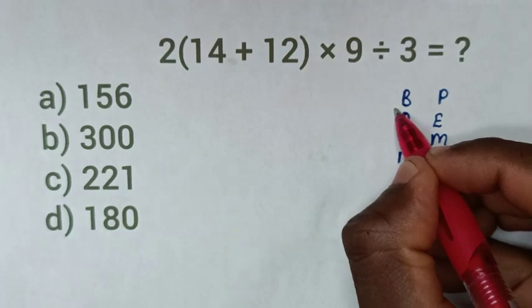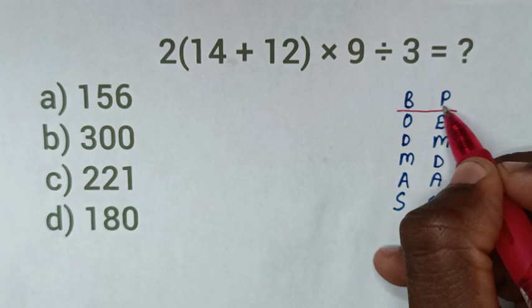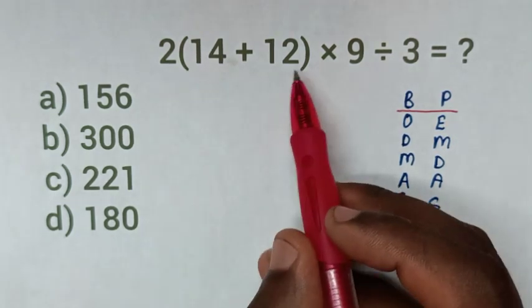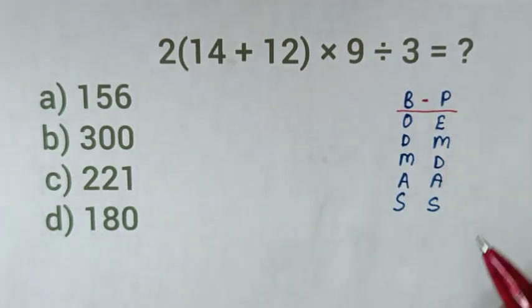B is bracket, P is parenthesis. We have here bracket or parenthesis, so we start to do this bracket or parenthesis.